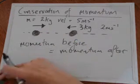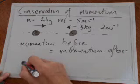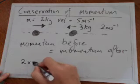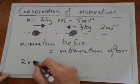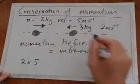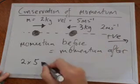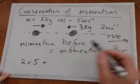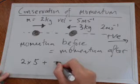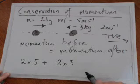So what's the momentum before? The momentum before is where we've got momentum of this ball, which is an object or whatever, it's 2 times 5, and the momentum of that. Now if we assume positive is in that direction, momentum of this object is going to be negative velocity. So it's going to be negative 2 times 3.